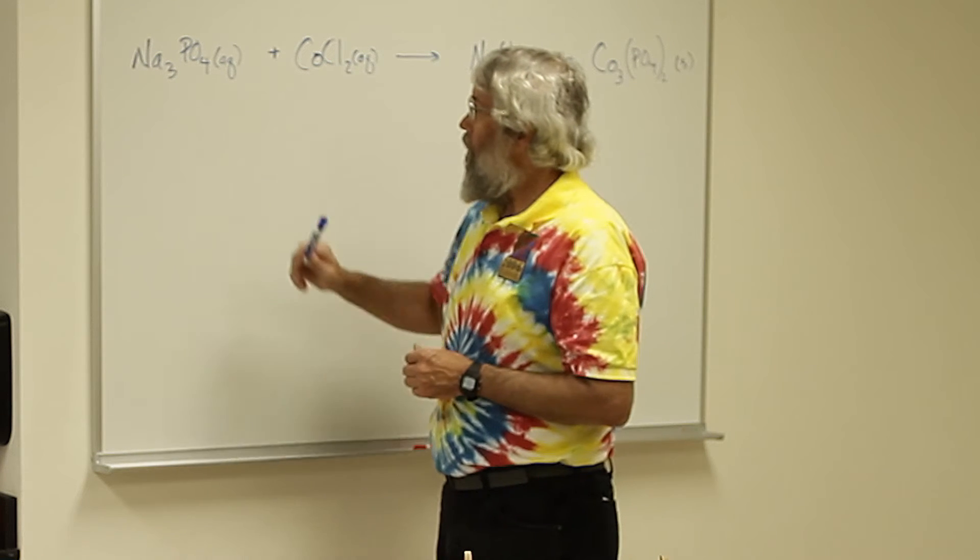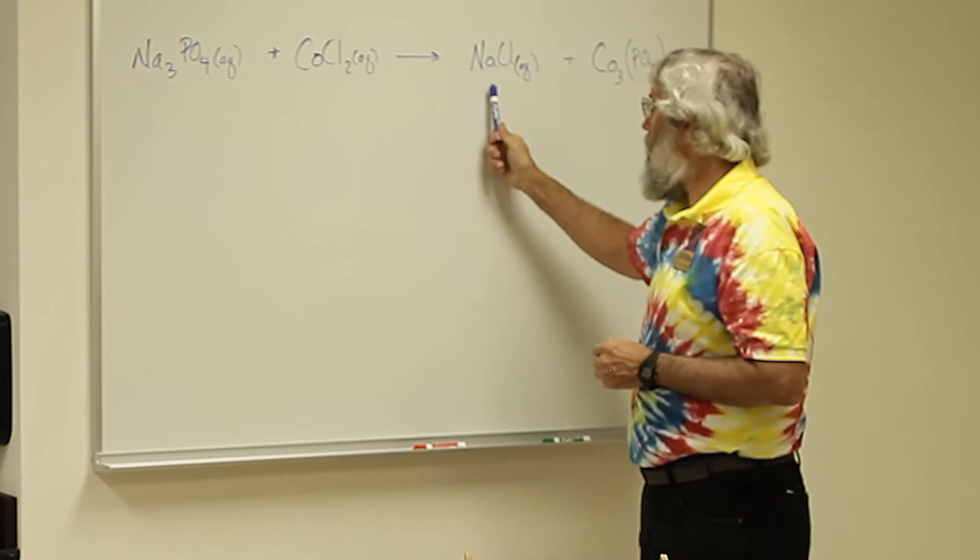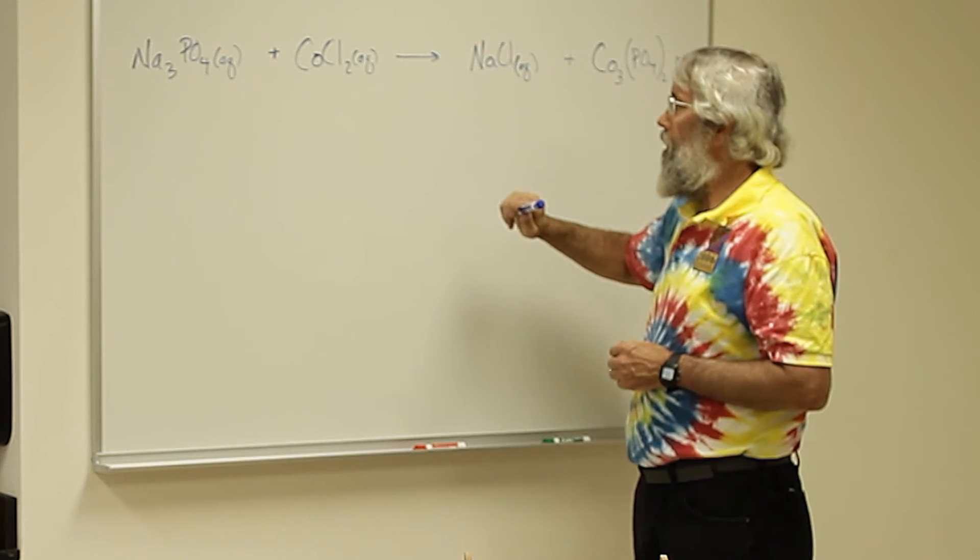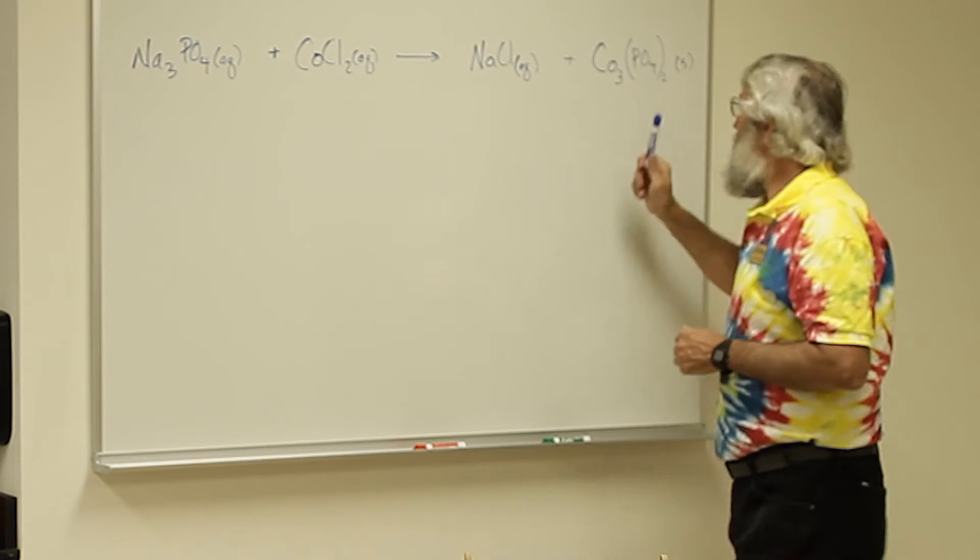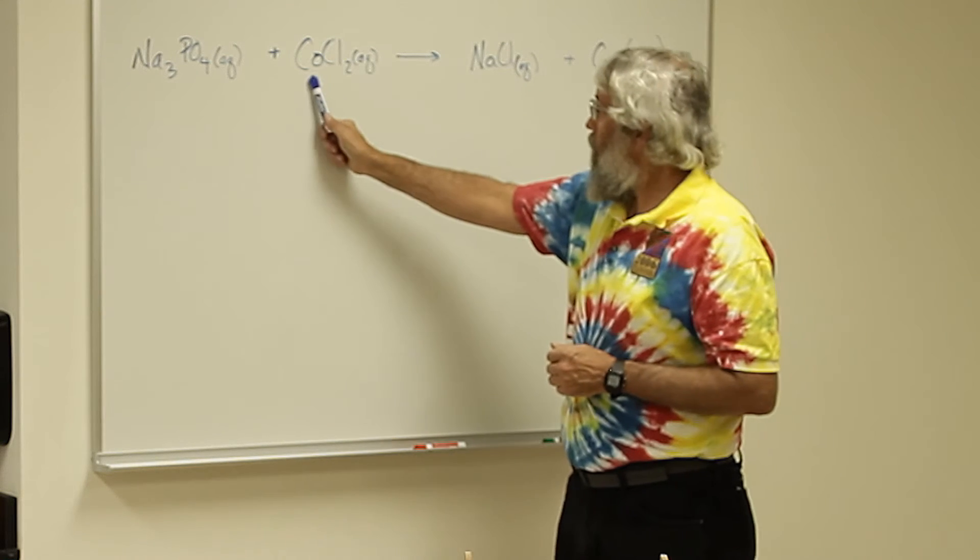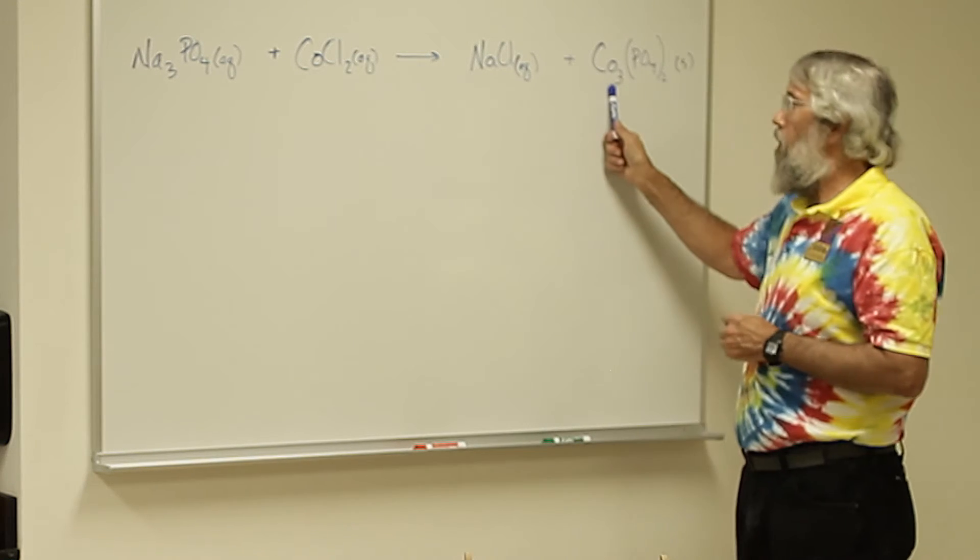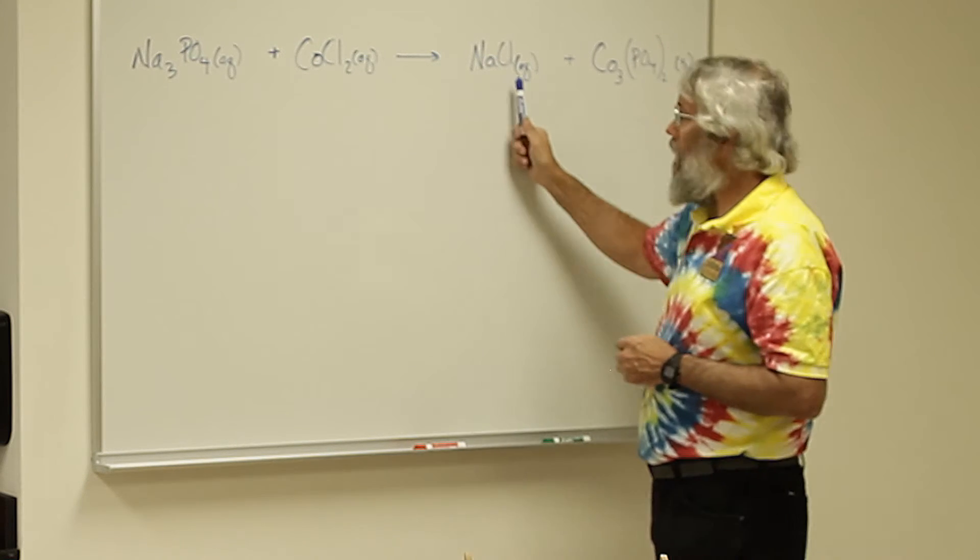If we start with sodium, we see that there are three sodiums on this side but only one on this side. There is one phosphate here but there are two phosphates here. There's one cobalt here but three cobalts here, and there are two chlorines here but only one chlorine here.